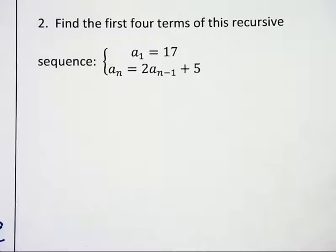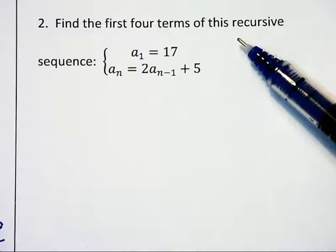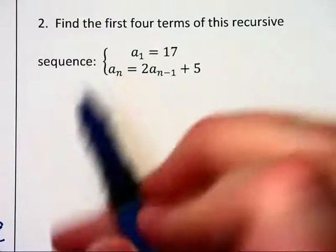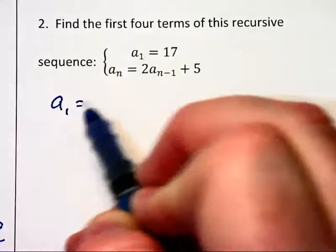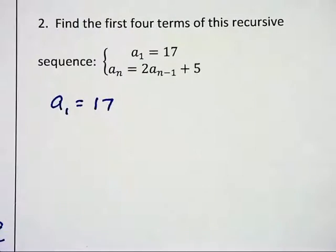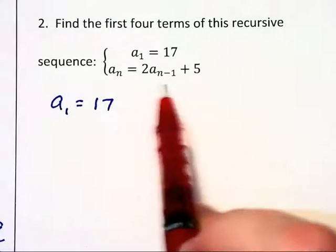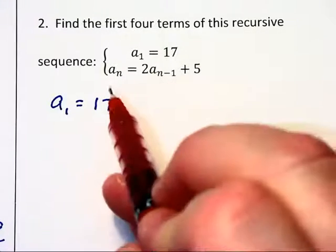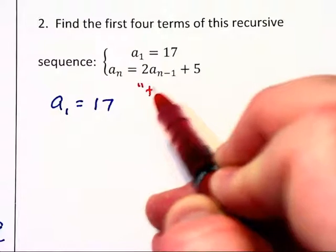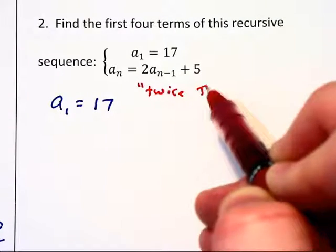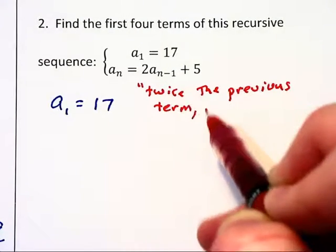Here we are being asked to find the first four terms of this recursive sequence. You do know that the first term is 17, but we also need to be able to read this formula. I read this as the next term is twice the previous term plus 5.